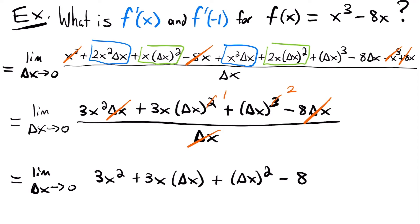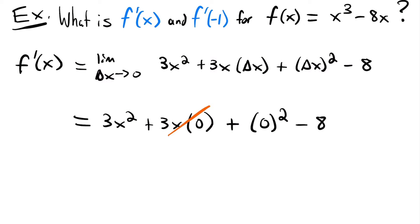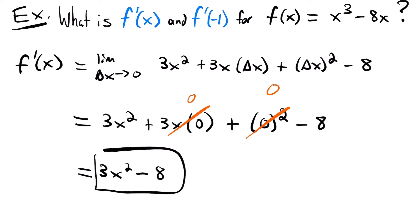Now we have a limit we can evaluate by plugging in 0 — no delta x in the denominator anymore, so no indeterminate form. We only plug in 0 for delta x, not x. Plugging in 0 gives 3x squared + 3x(0) + 0 squared - 8. Those middle terms become 0, so our derivative is 3x squared minus 8.